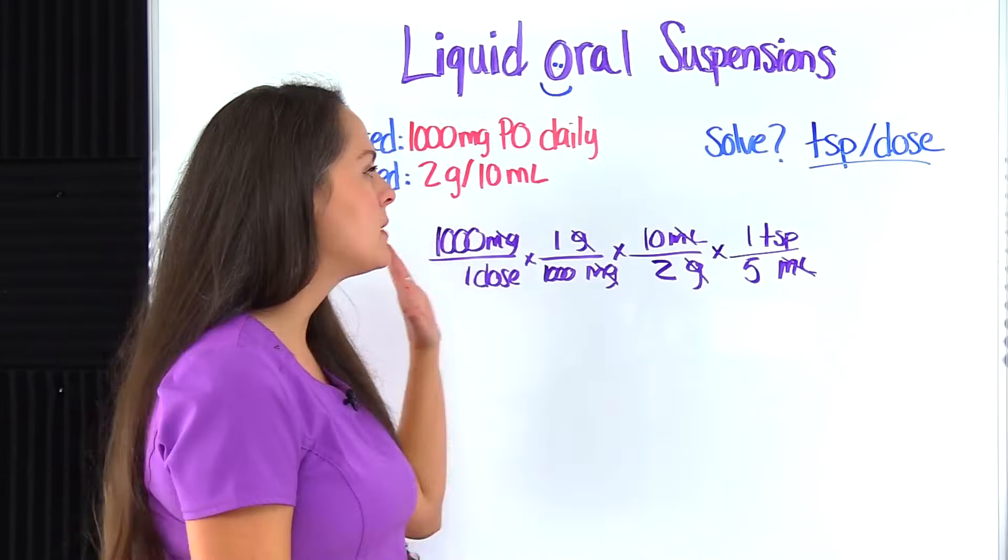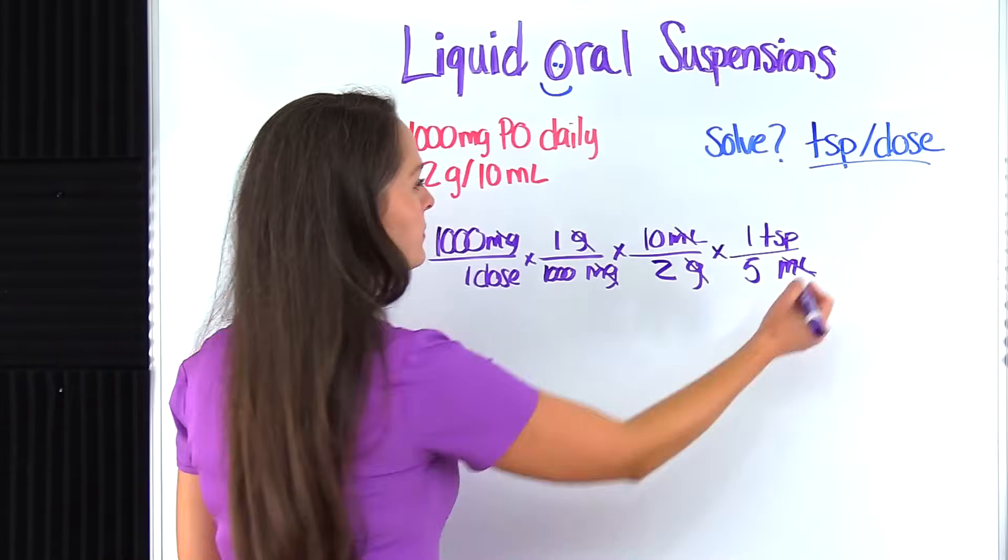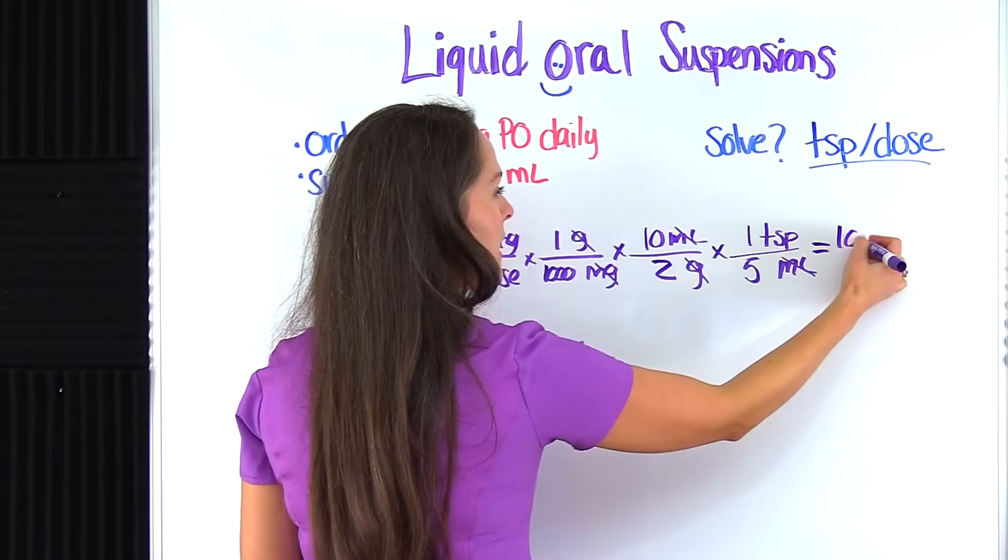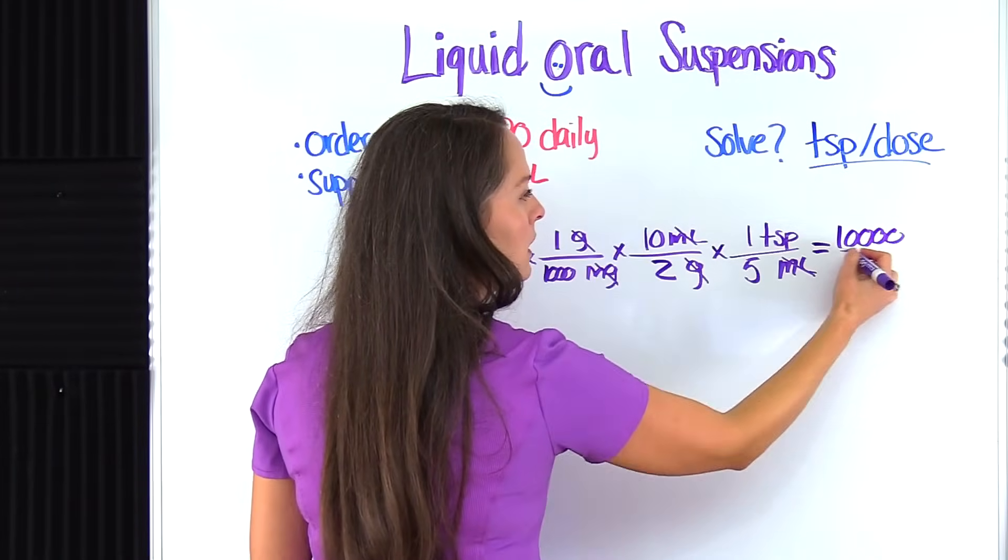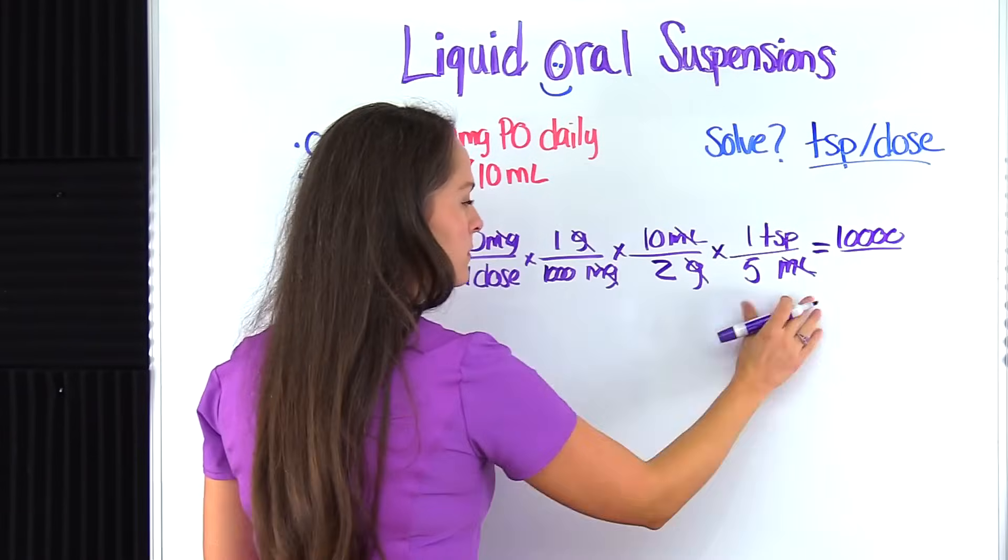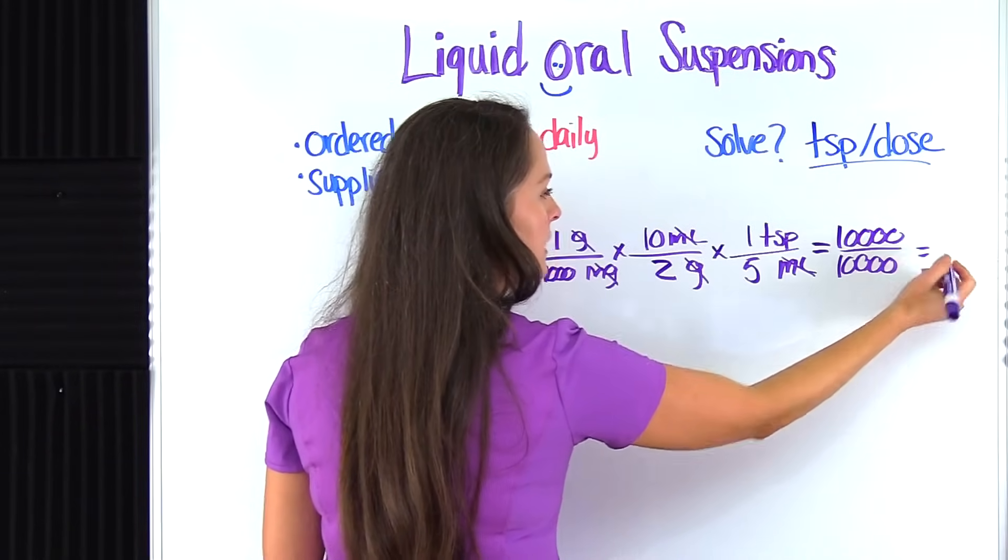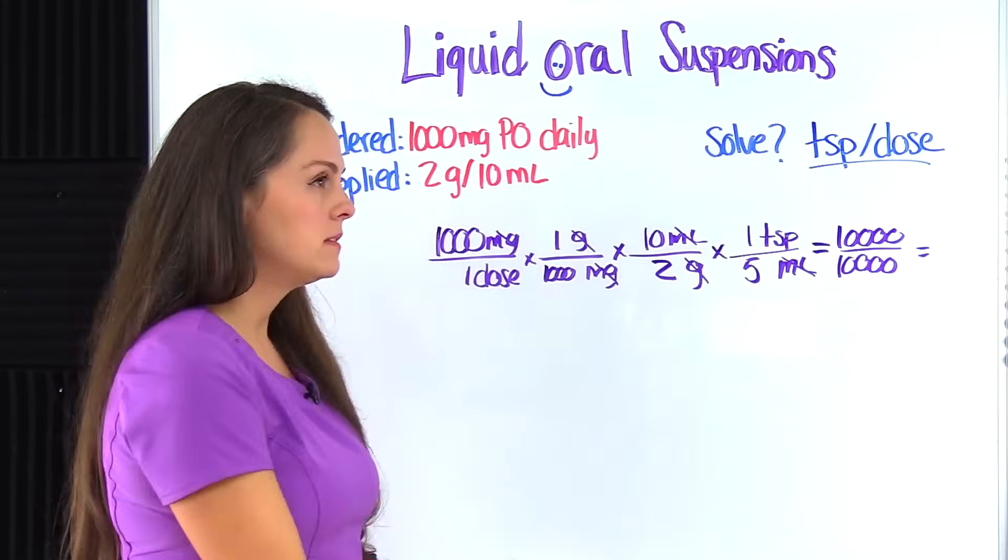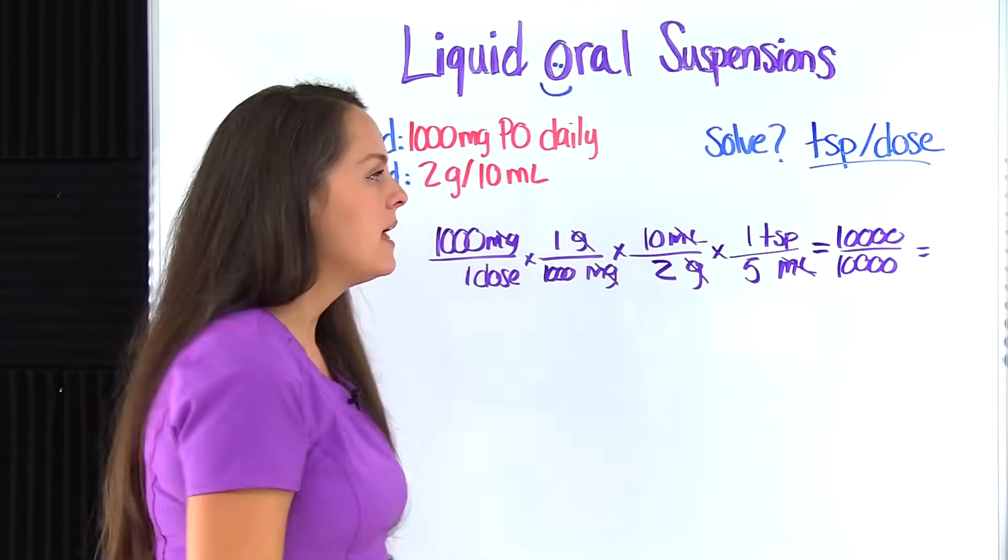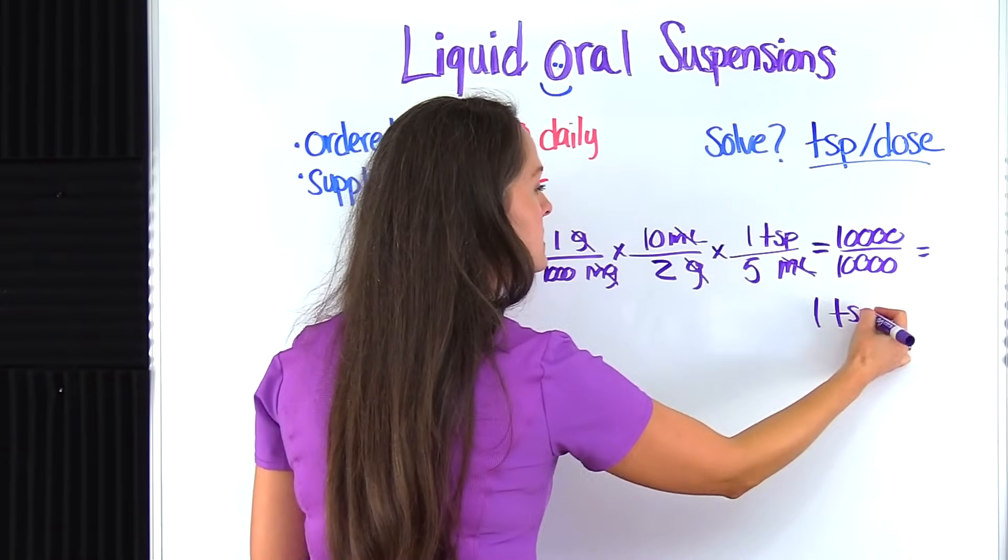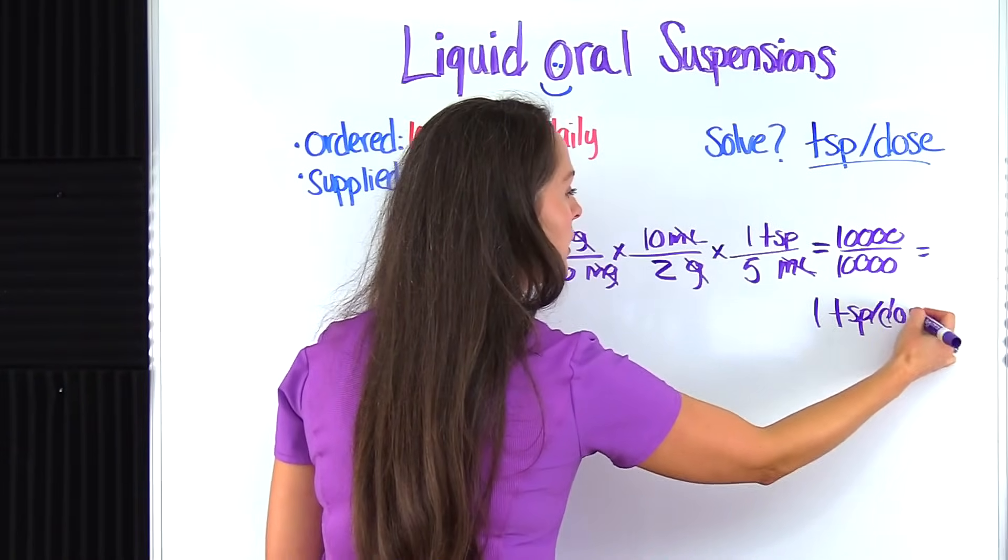So now let's multiply everything at the top and multiply everything at the bottom. And when we do that, we get 10,000 up at the top. When we multiply everything at the bottom, we also get 10,000. Then we have to divide that. So 10,000 divided by 10,000, that gives us one. So our answer is one teaspoon per dose.